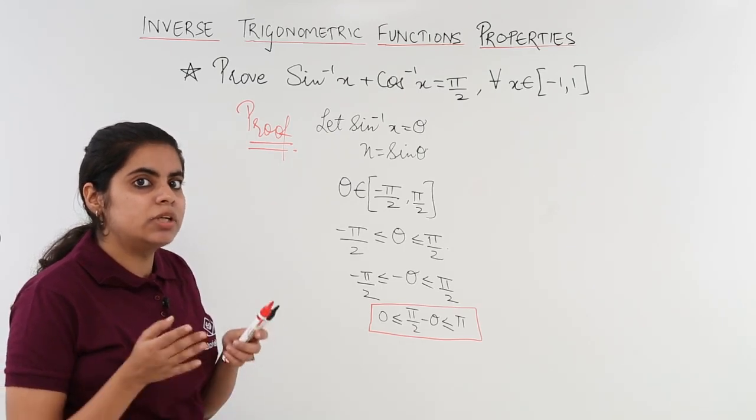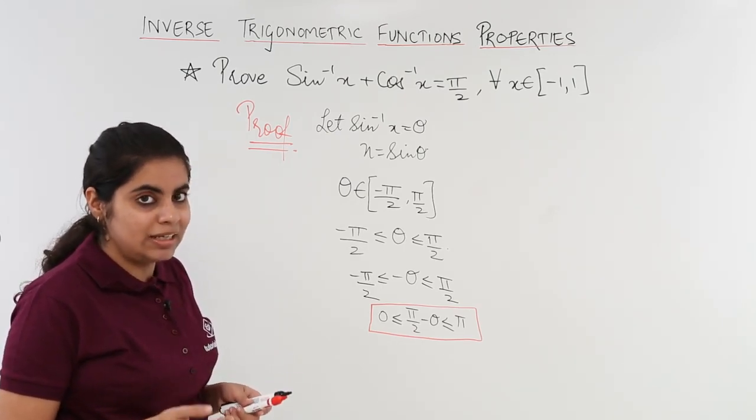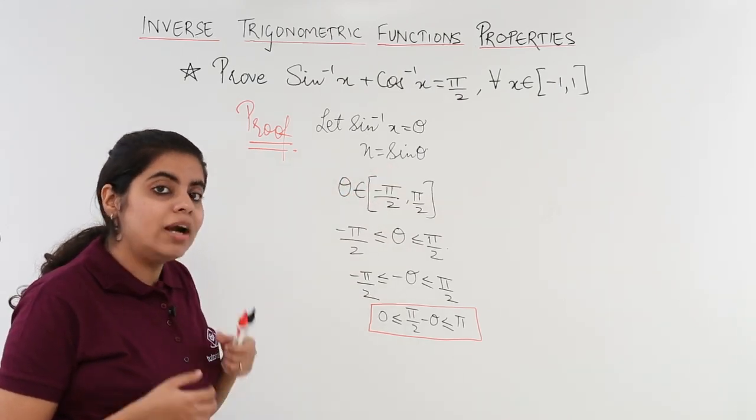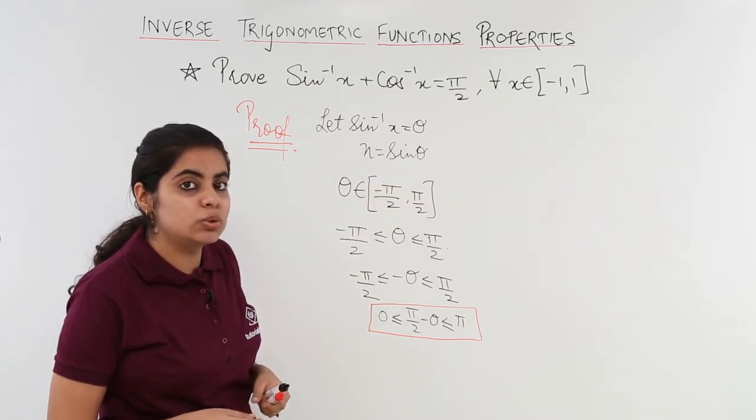Now the next step is we need to prove the things that we were taking. So if x is equal to sin theta what else is sin theta equal to in the form of cos?